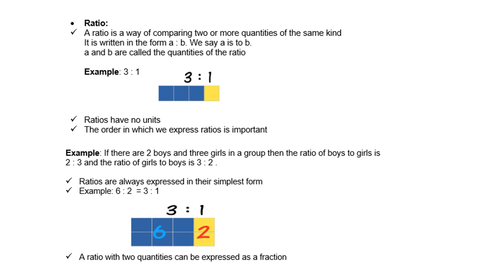A ratio is a way of comparing two or more quantities of the same kind. It is written in the form A colon B, and we say A is to B. A and B are called the quantities of the ratio.